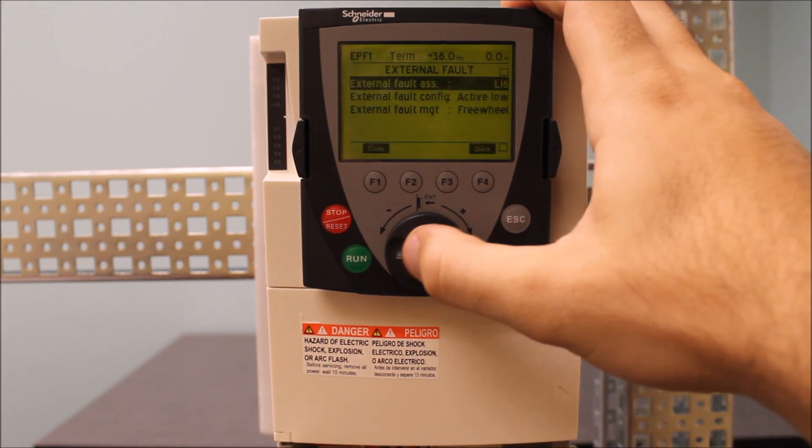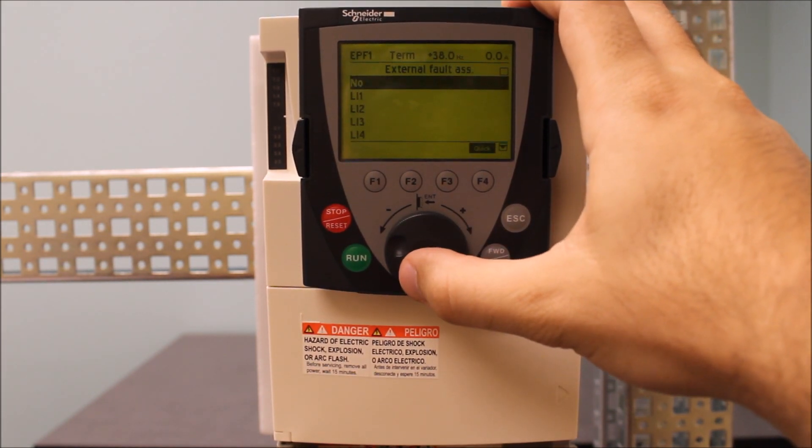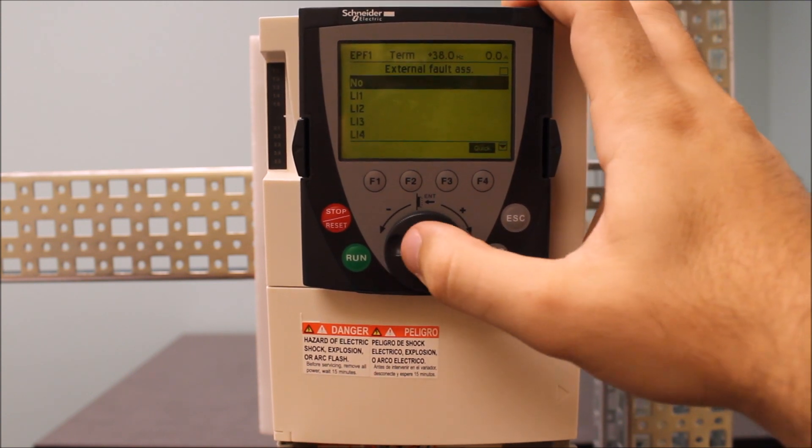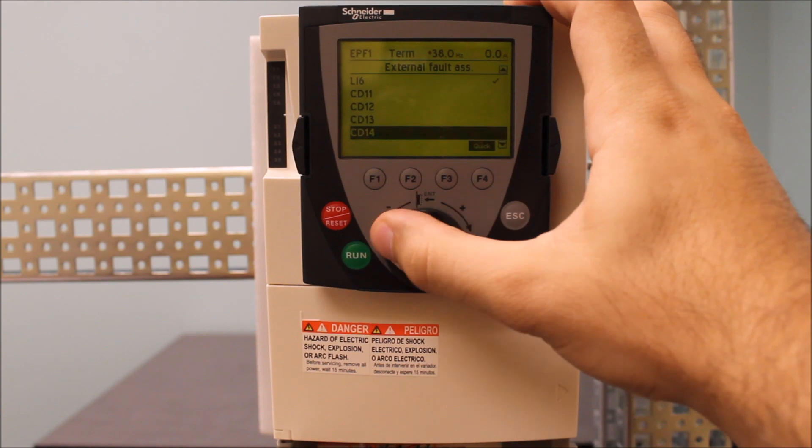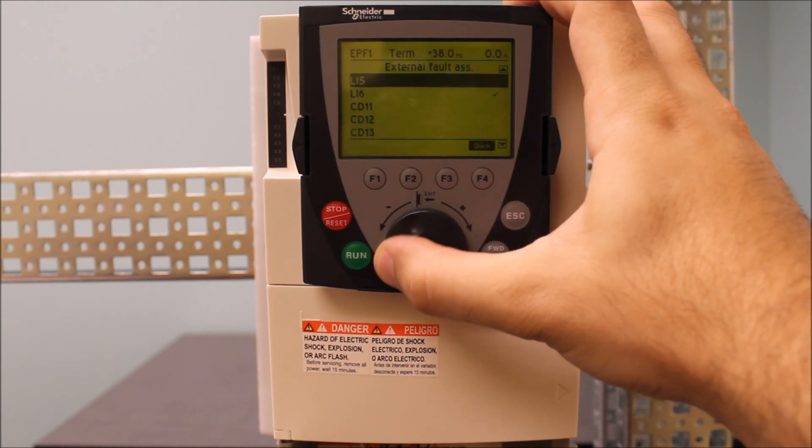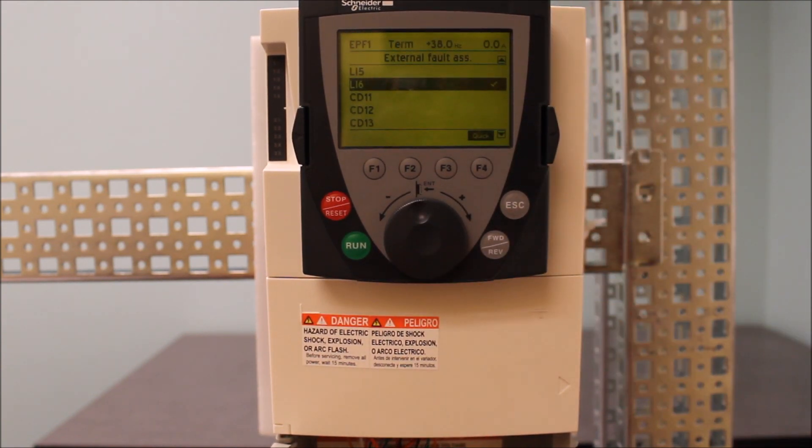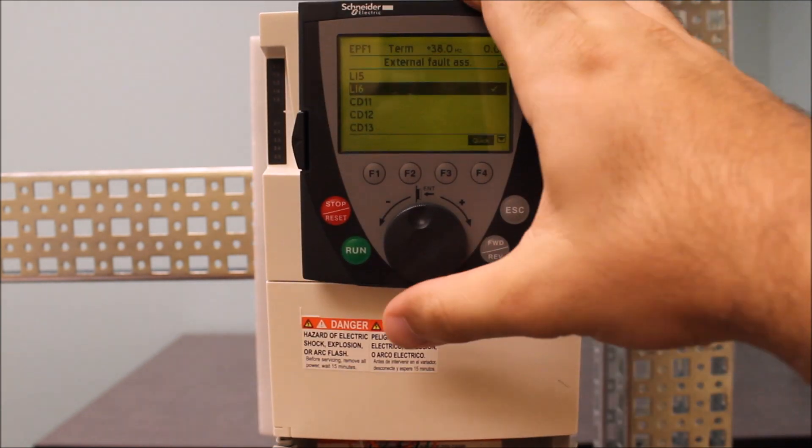And of course, the assignment itself, if it should not be programmed at all, it should be a no assignment. But right now, we have LI6 checked, which means it is programmed to a digital input, and that digital input is not being satisfied, which is why it's causing that fault code on the top left.